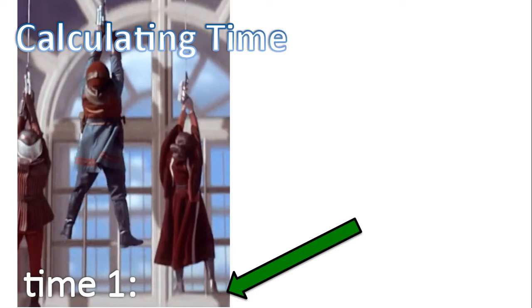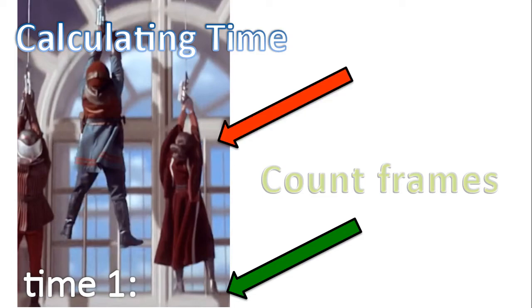Now to calculate time. We're going to call that time 1, where the green arrow is pointing. And that's the time her foot will hit the bottom of the glass. And we're going to count frames. We'll stop counting frames at the red arrow. That is, when her foot passes the red arrow, or the upper part of the glass.